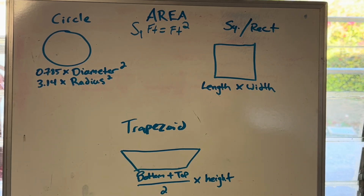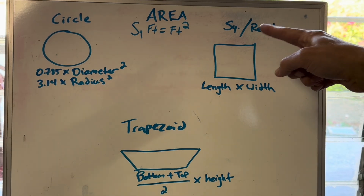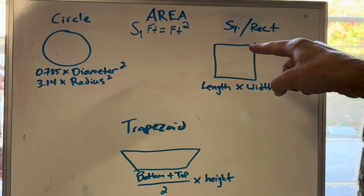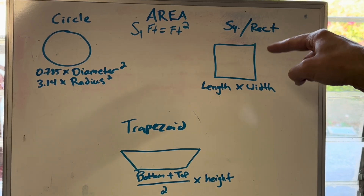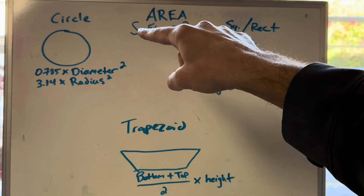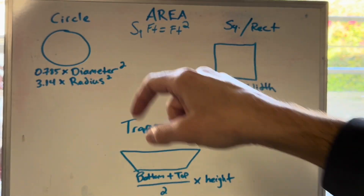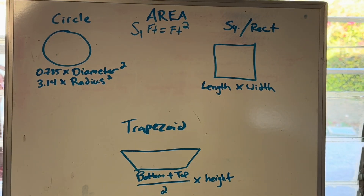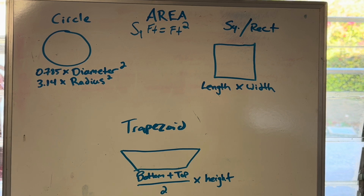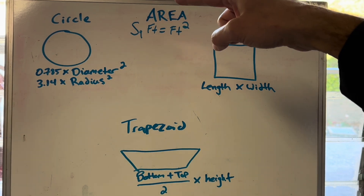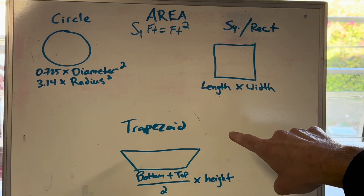What are we talking about with square feet? Let's take this square for instance — it's how many one-foot by one-foot squares will fit in that shape. This does not have to be a whole number; it can be a decimal, and it's oftentimes a decimal. That is what square feet are, and that is what we're talking about when we discuss area. The three most common shapes you're going to need to know are the circle, the square or rectangle, and the trapezoid.